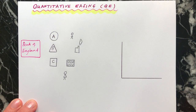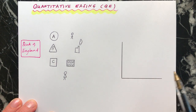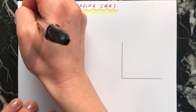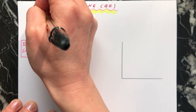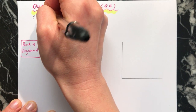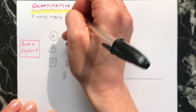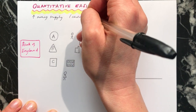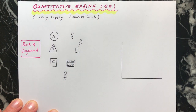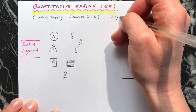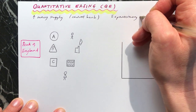Hi everybody. Today in this video we're going to talk about quantitative easing, which is sometimes called QE for short. You may well have heard about this in the news and wondered what this is. In very simple terms, this is where there's an increase in the money supply, done by the central bank. This is a form of expansionary monetary policy.